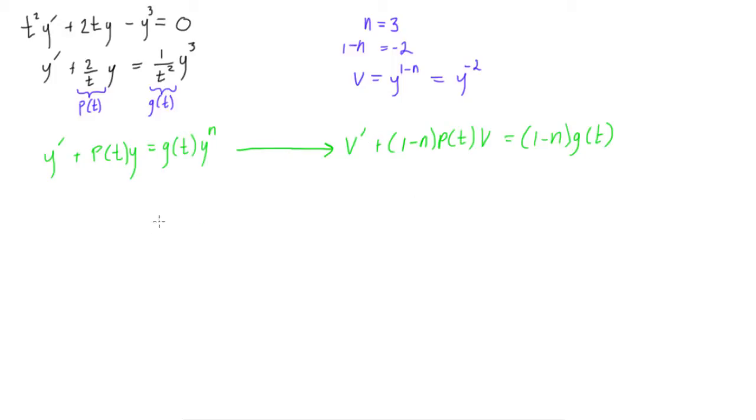Okay, so knowing that, we're going to fill in some values here. We can say that v prime plus, well 1 minus n is negative 2, so actually that's going to be minus 2, minus 2 times p of t. p of t is 2 over t, so times 2 over t, times v. Okay, and this is going to be equal to 1 minus n times g of t. 1 minus n is minus 2, and g of t is 1 over t squared, so times 1 over t squared. Okay, and notice that there's no y to the n here. It disappears once we apply this. And if you did all of the steps leading up to this, you would see why.